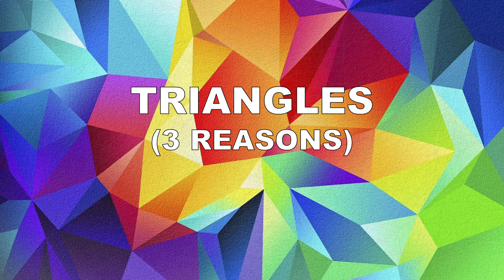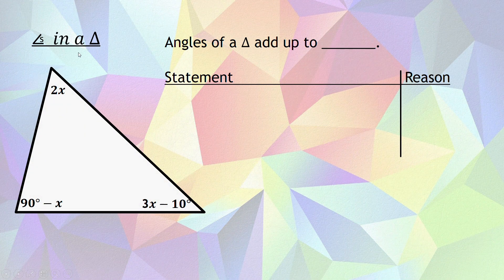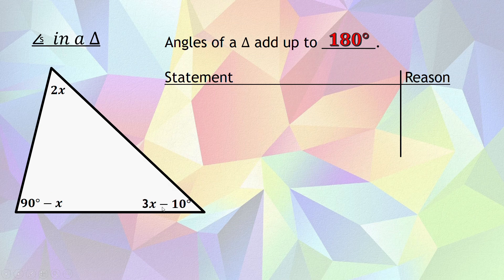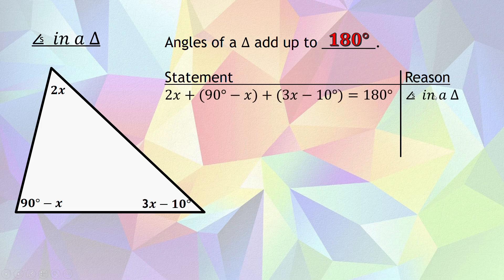In this video we're working with triangles and we're working with the three reasons in geometry for triangles. The first one is angles in a triangle. With angles in a triangle, the angles of a triangle add up to 180 degrees. So whatever is written at each vertex should all add up to 180. I can write that as a statement and my reason will be angles in a triangle.